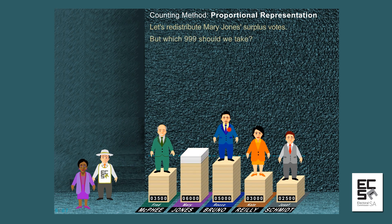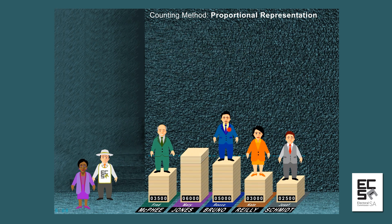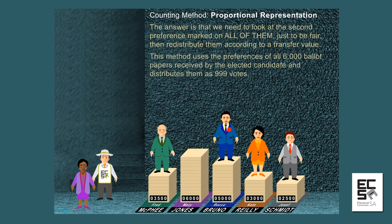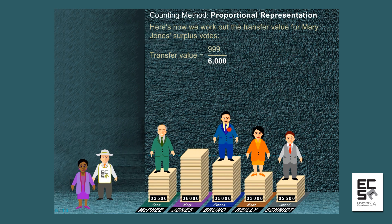Let's redistribute Mary Jones's surplus votes. But which 999 should we take? The ones that happen to be on the top? What makes them so special? What if they're quite different to the other 5,001? The answer is that we need to look at the second preference marked on all of them, just to be fair, then redistribute them according to a transfer value. This method uses the preferences of all 6,000 ballot papers received by the elected candidate and distributes them as 999 votes. The transfer value equals number of surplus votes divided by number of ballot papers received: 999 divided by 6,000 equals 0.1665.